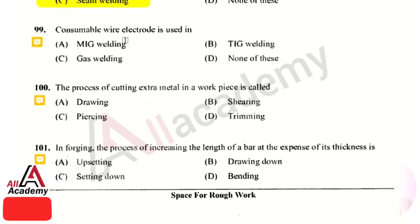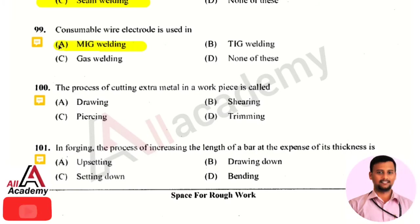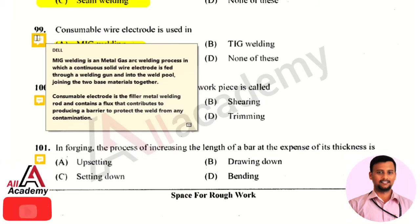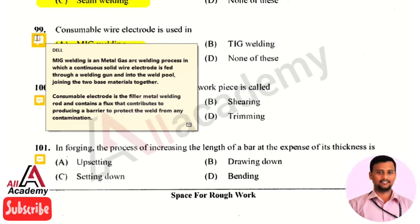The next question: the consumable wire electrode is used in — the right answer is option 1, that is MIG welding. In MIG welding, a continuous solid wire electrode is fed through a welding gun and onto the weld pool, joining two base materials together. The consumable electrode is a filler material or metal welding rod which contains flux that protects the weld from contamination.